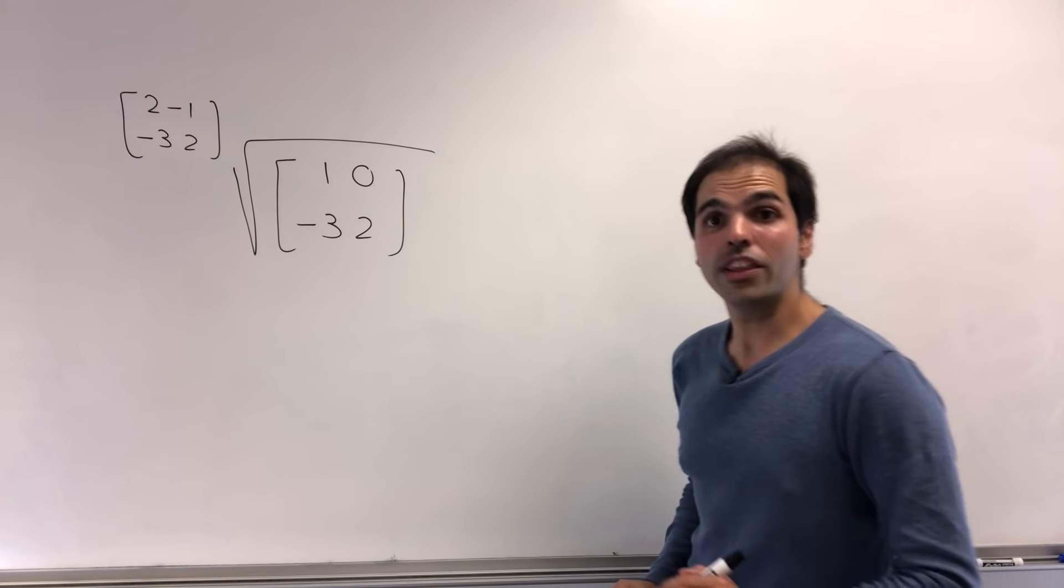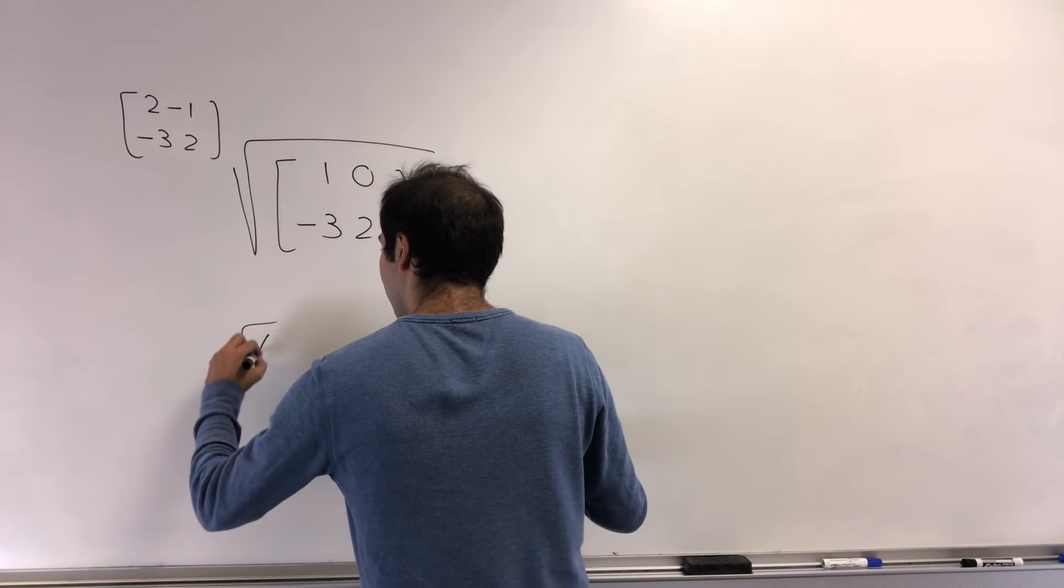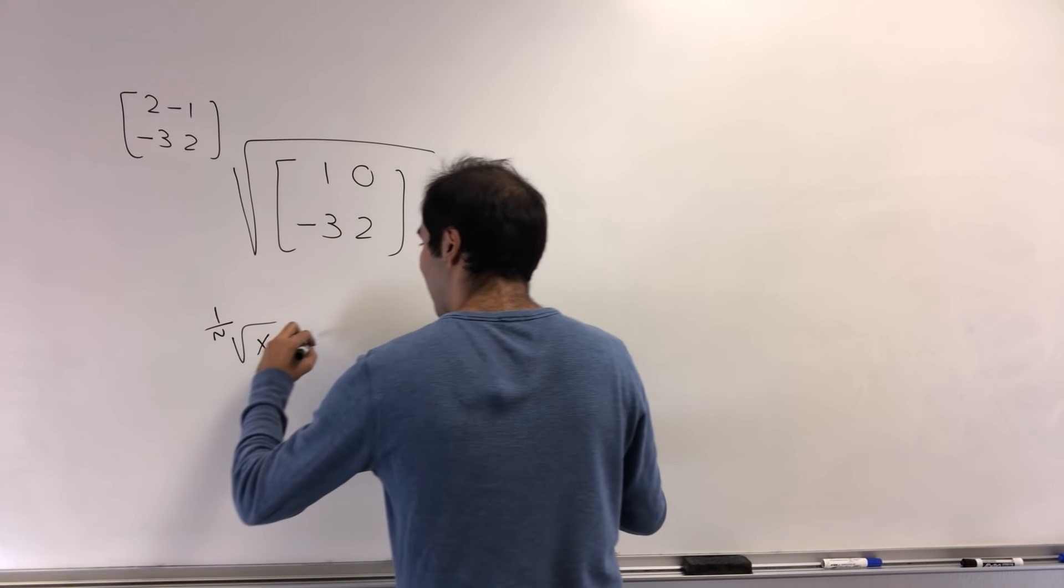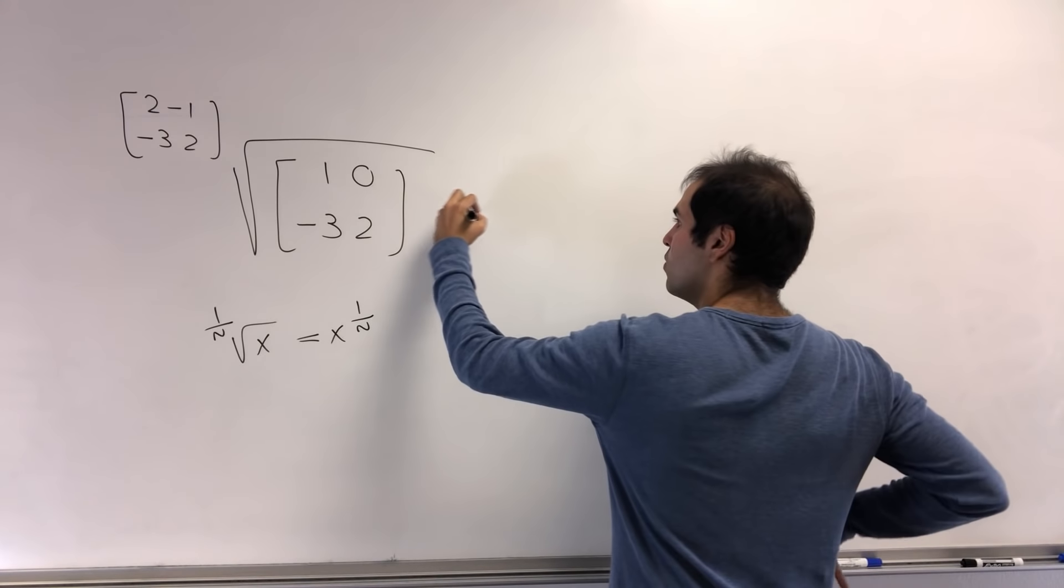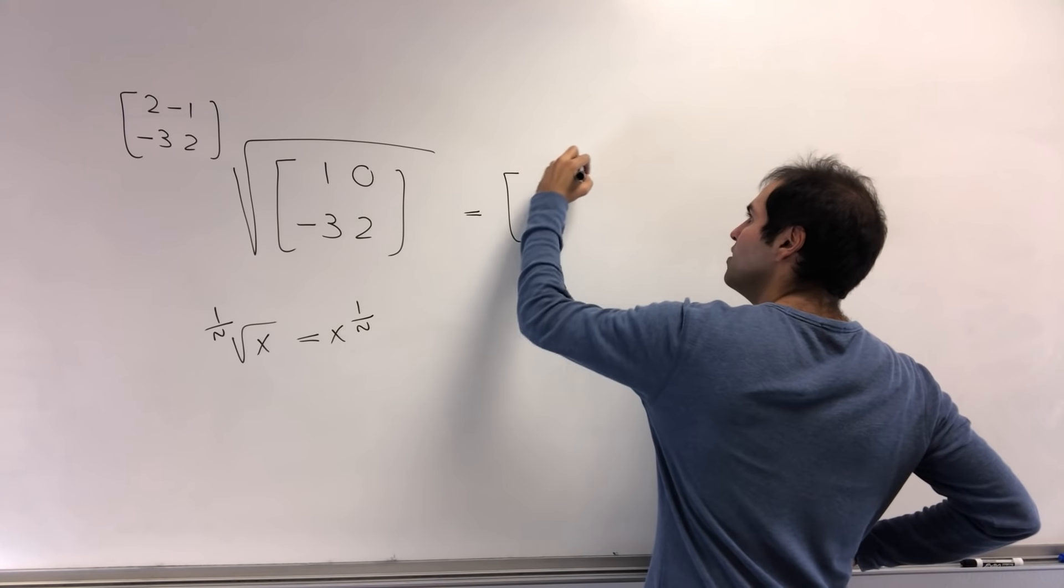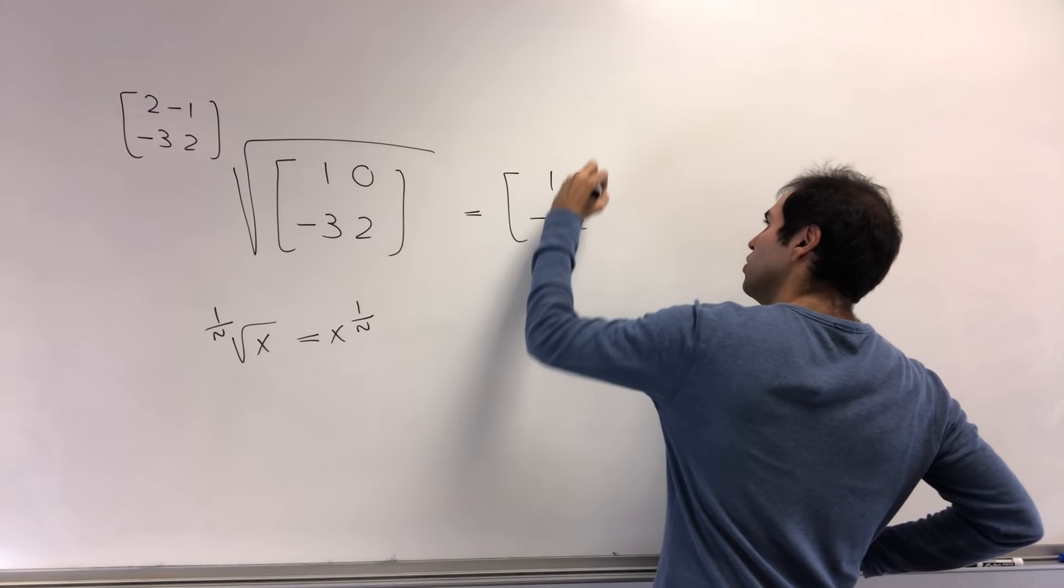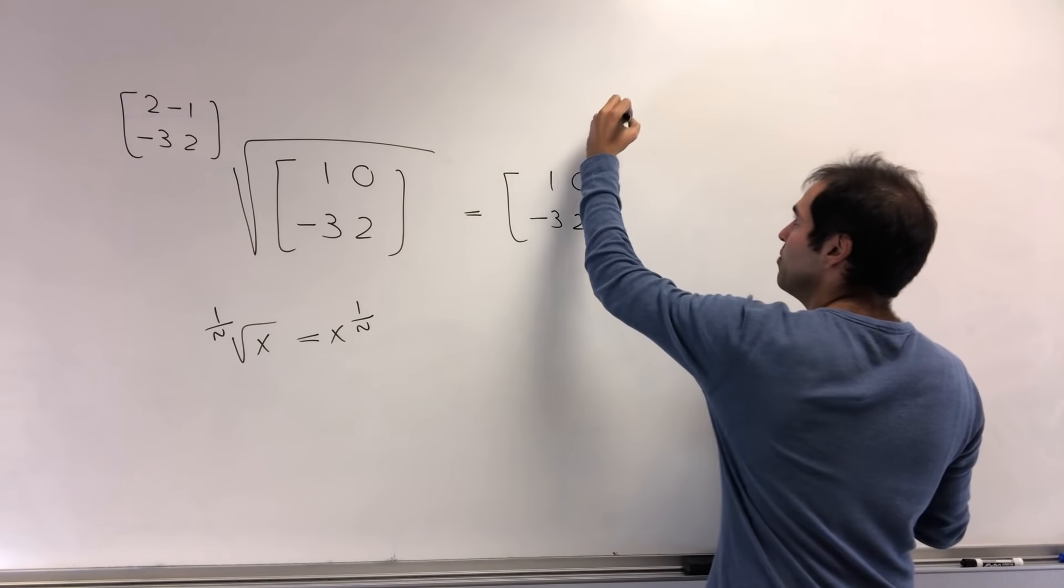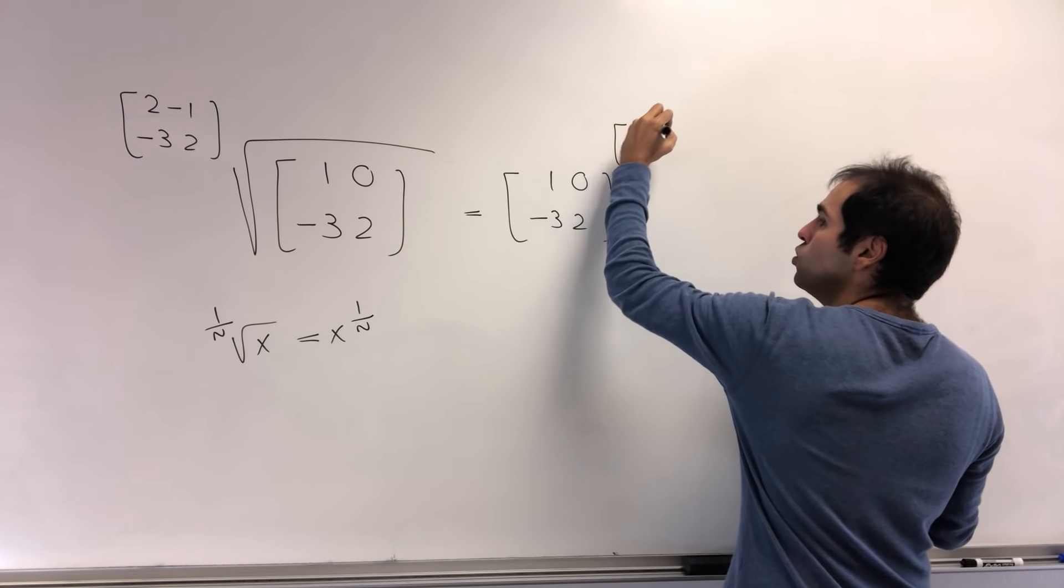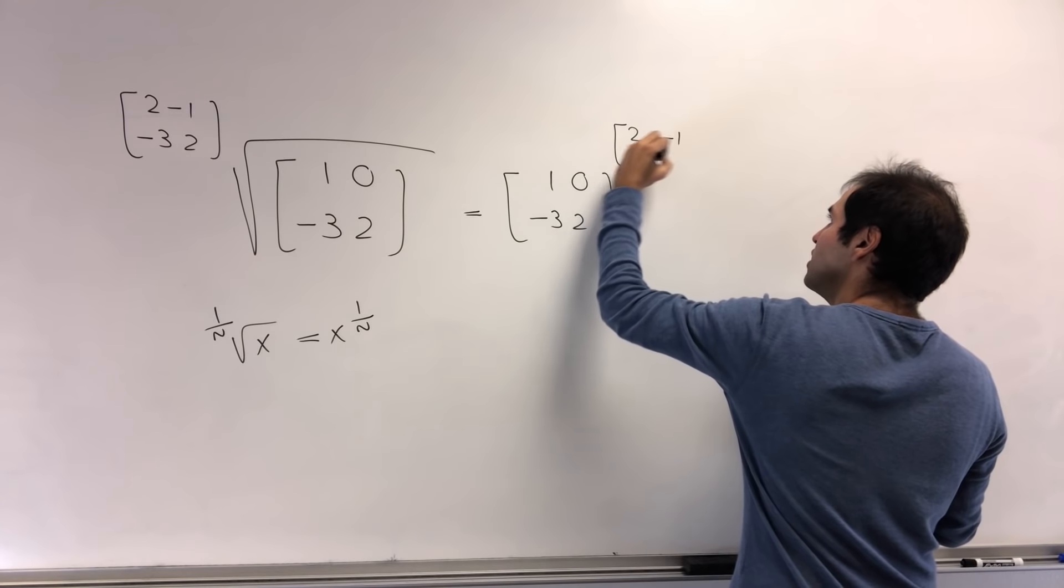Now what do we want to find? So by analogy, the nth root of x, that's just x to the 1 over n. So what we want is 1, 0, minus 3, 2, to the 1 over 2 minus 1 minus 3, 2. So 2 minus 1 minus 3, 2 inverse.